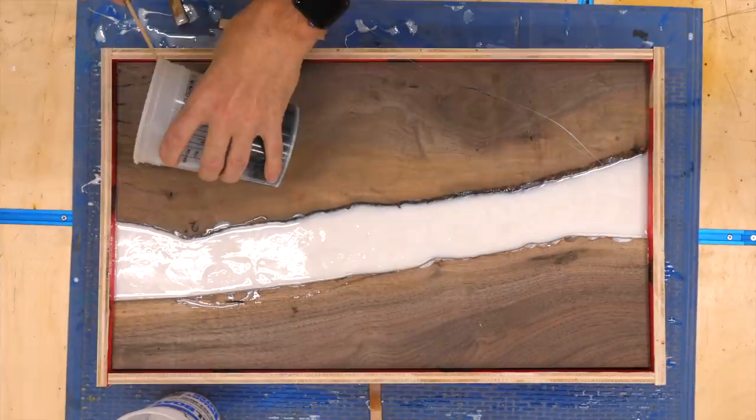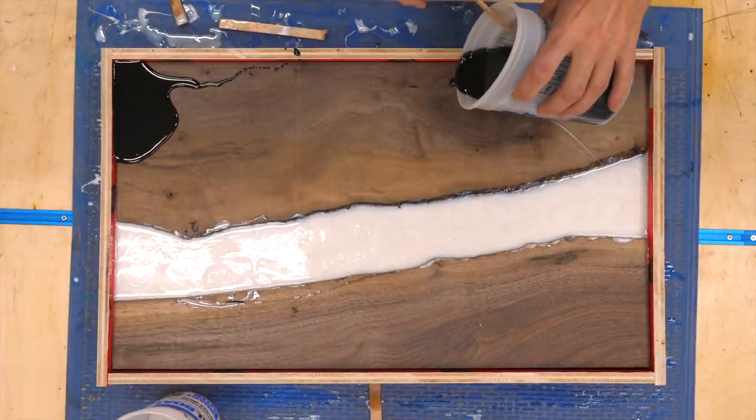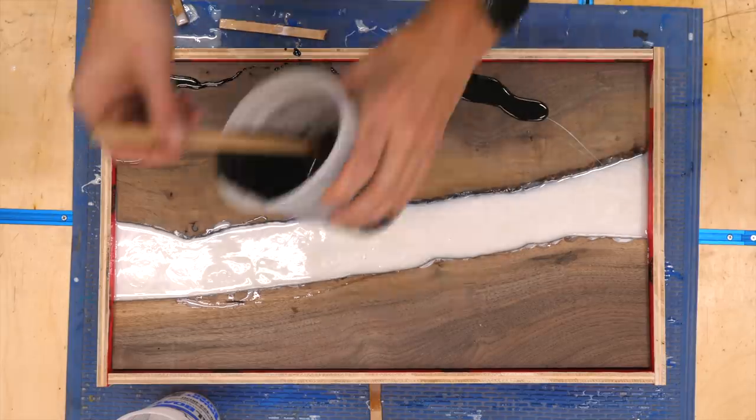With the last pour done, I made sure to swirl the epoxy and I came back with some black tinted epoxy to fill any cracks or voids that were left over.